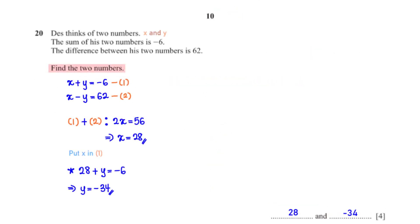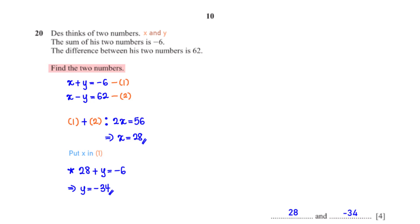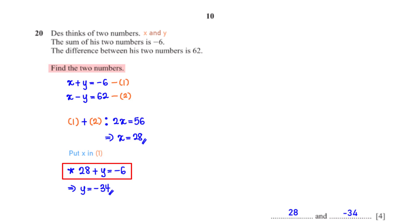The sum of two numbers is −6 and the difference between them is 62. Let the numbers be x and y: x + y = −6 and x − y = 62. Using elimination, adding the equations gives 2x = 56, so x = 28. Substituting into equation one: 28 + y = −6, giving y = −34.